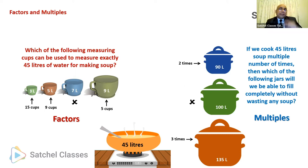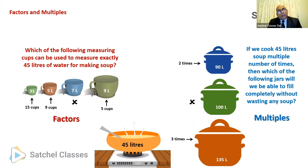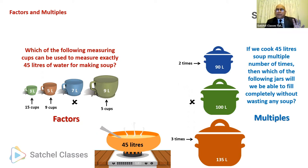One important thing to remember: factors are always smaller than or equal to the number — 3, 5, and 9 are all smaller than 45, and 45 itself is a factor of 45, but factors cannot be bigger than the number. On the other hand, multiples are bigger than or equal to the number — 90 and 135 are bigger than 45, and 45 itself is a multiple of 45. Multiples cannot be smaller than the number. So remember: factors are small, multiples are big.